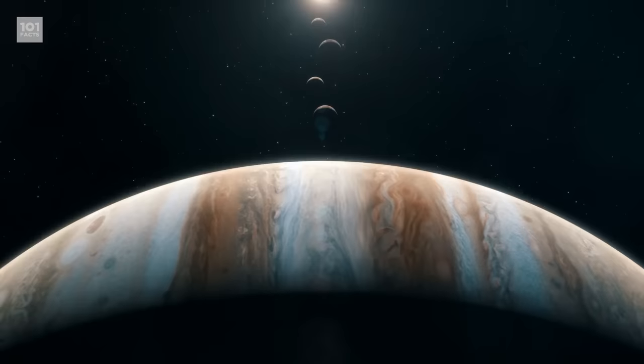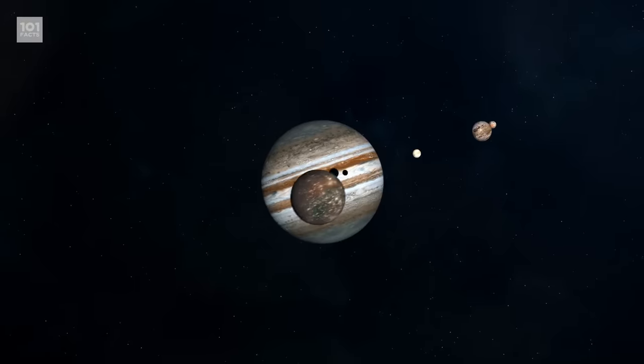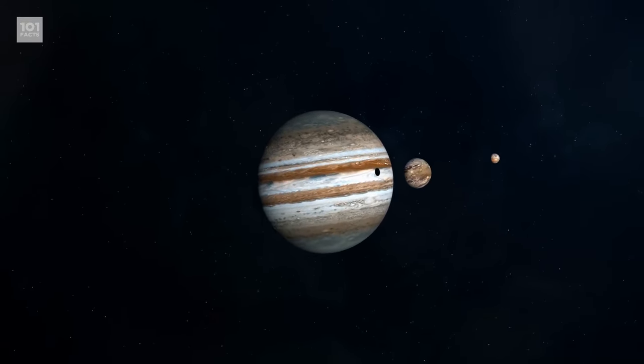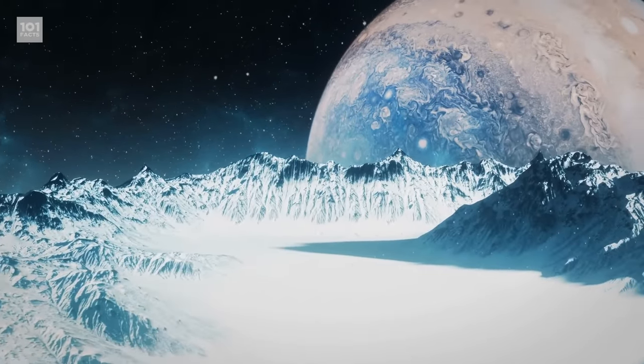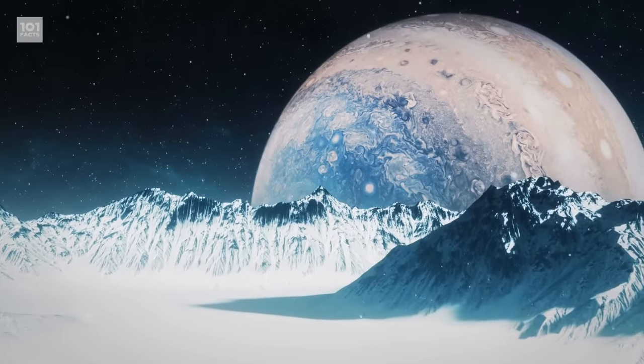Jupiter has 79 moons, which is just greedy, isn't it? And many other natural satellites in its orbit. The four major moons are Io, Europa, Ganymede, and Callisto. Ganymede is actually the largest moon in the entire solar system, at 5,262 kilometers in diameter. It's even bigger than Mercury.